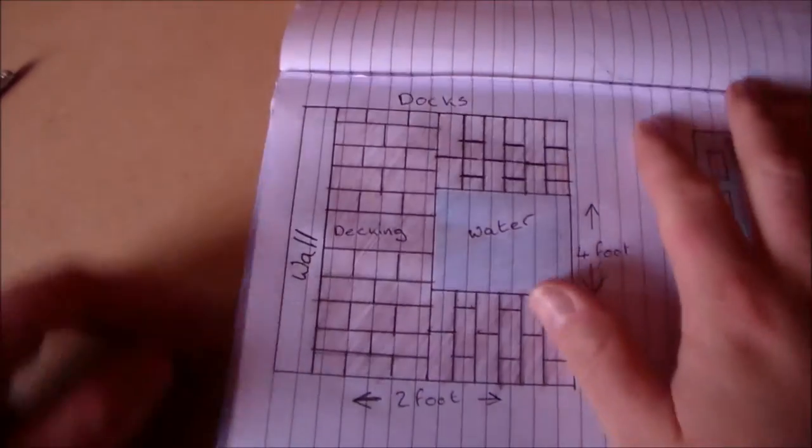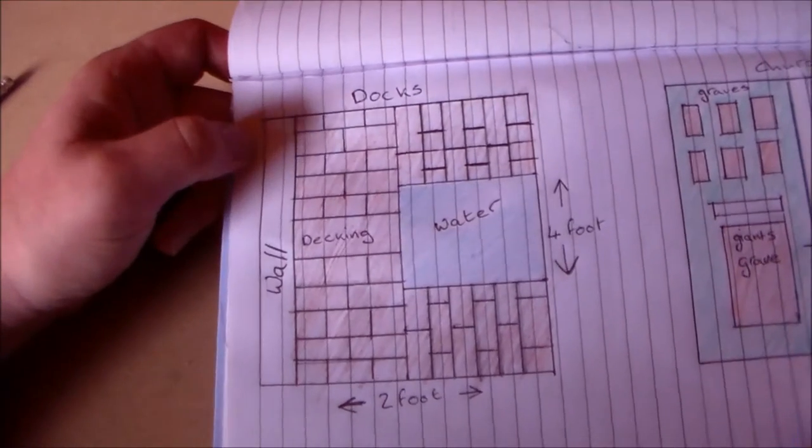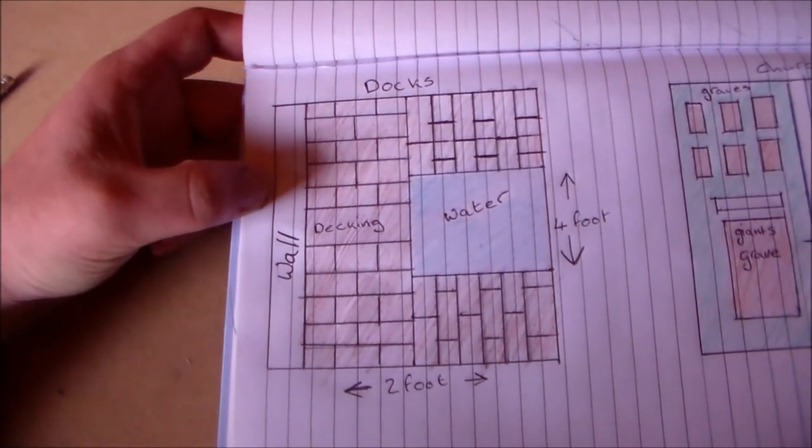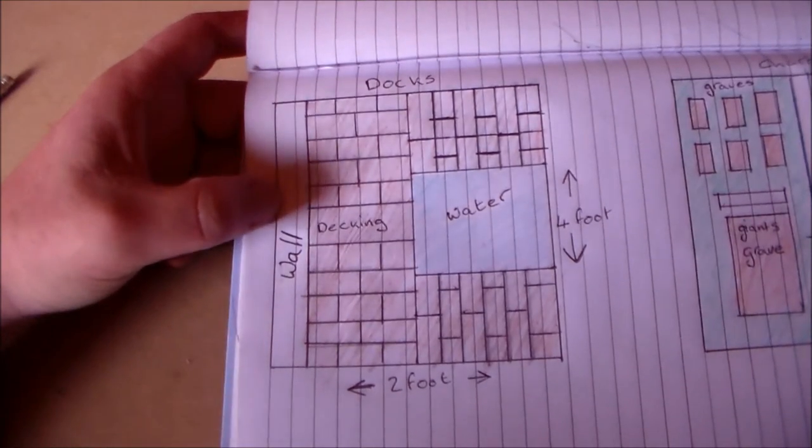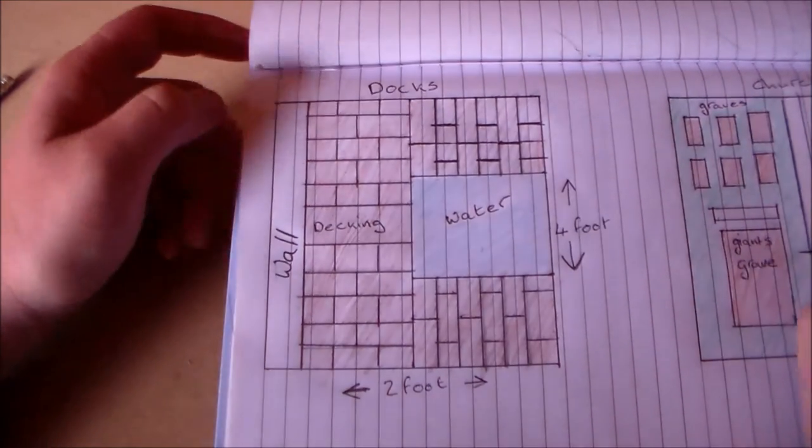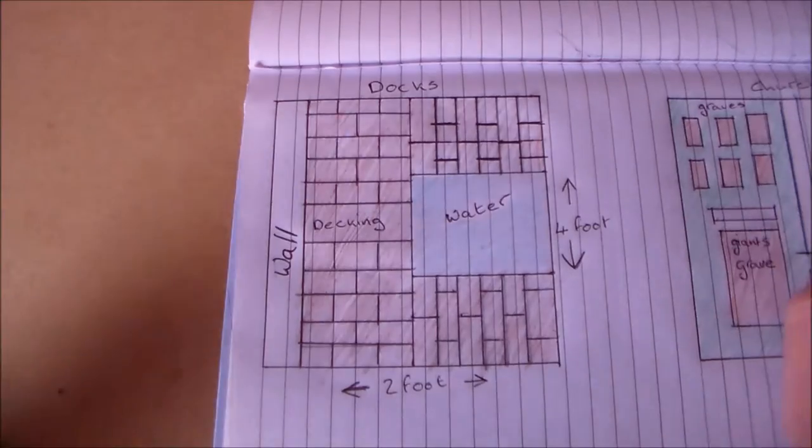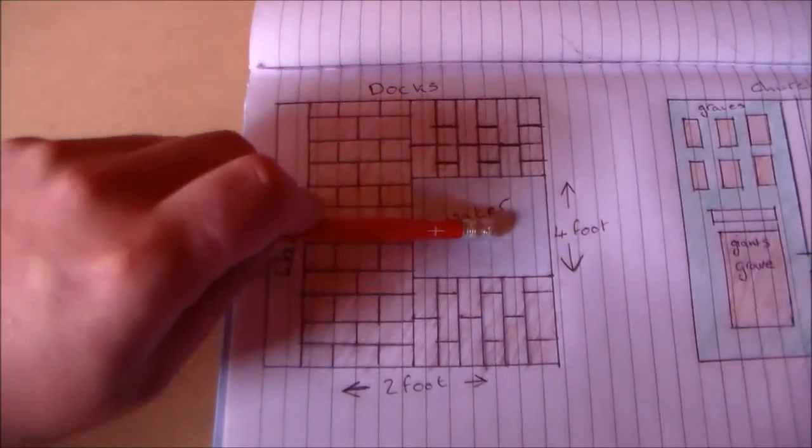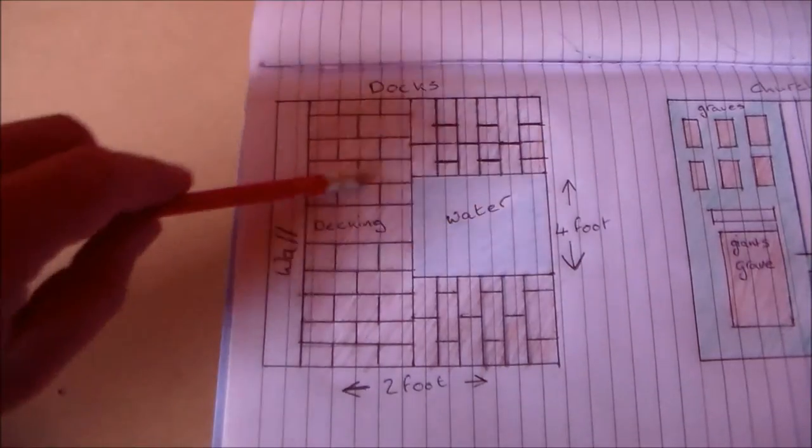So, the first part I worked on was the docks. This is going to be section 3 and 6. It's going to be at the end of the table and I wanted this kind of area for boats and, you know, shipping boats and marina. So, you'll have your decking to walk across two piers coming out and then you'll have your water going through underneath.